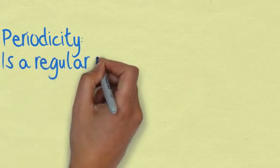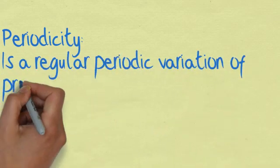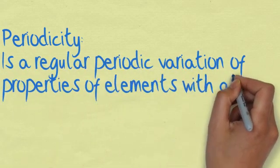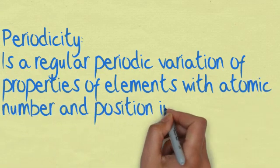Periodicity is a regular periodic variation of properties of elements with atomic number and position in the periodic table.